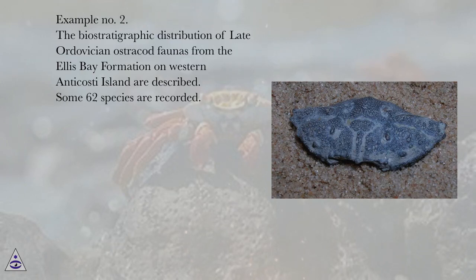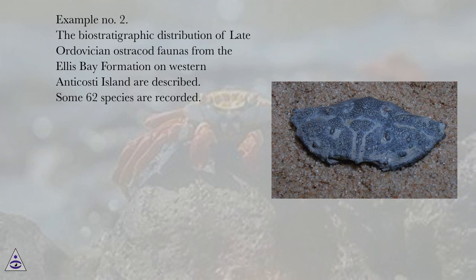The biostratigraphic distribution of late Ordovician ostracod faunas from the Ellis Bay Formation on western Anticosti Island are described. Some 62 species are recorded.